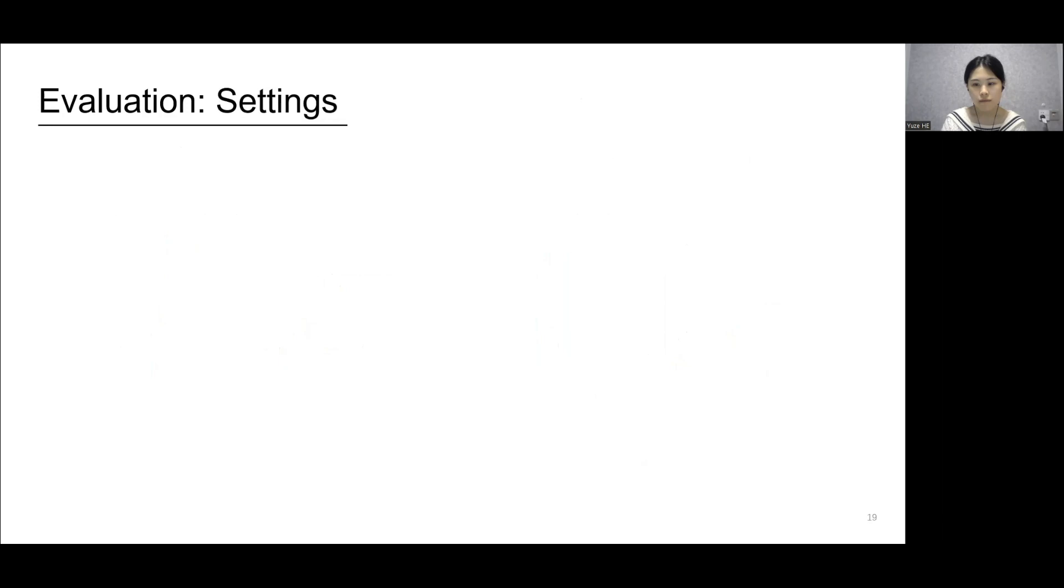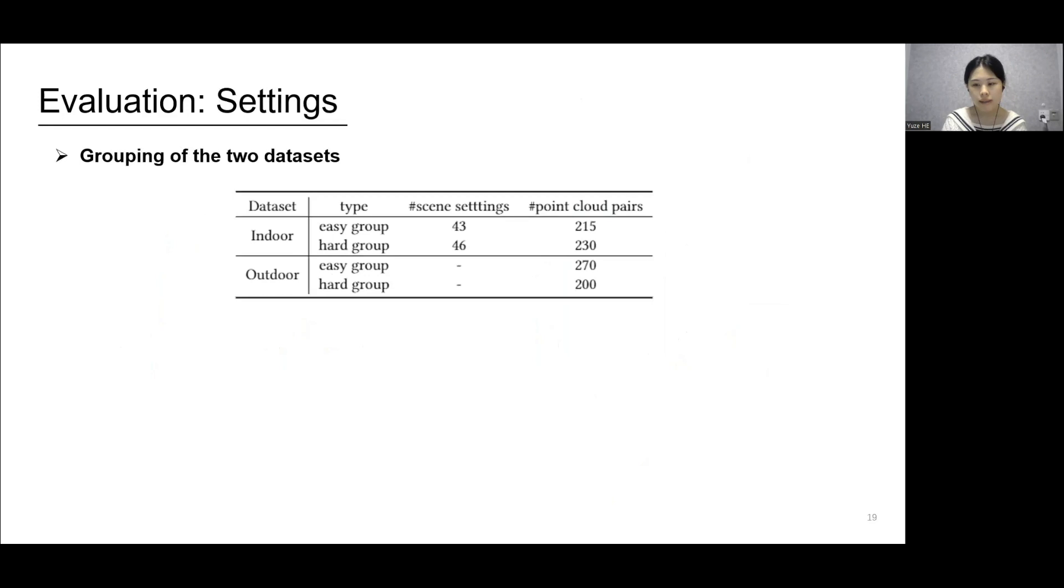Next, we evaluate the performance of our system with other registration algorithms. We divide each of the datasets into two groups, an easy group and a hard group. The hard group contains point cloud pairs with a large rotation or a small overlap ratio. The rest of the point cloud pairs constitute the easy group.